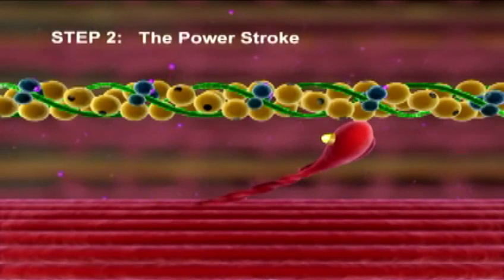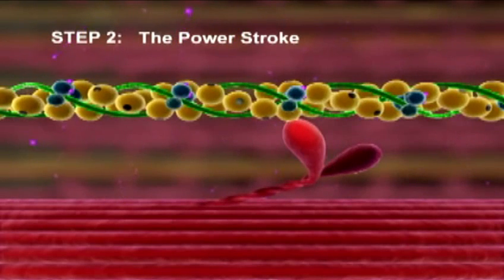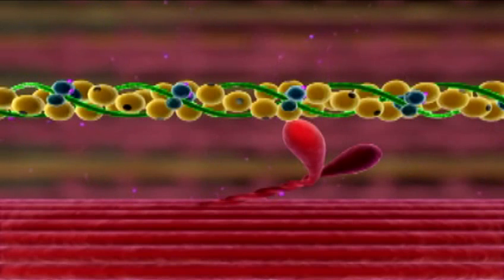Step 2: The Power Stroke. ADP is released and the activated myosin head pivots, sliding the thin myofilament toward the center of the sarcomere.